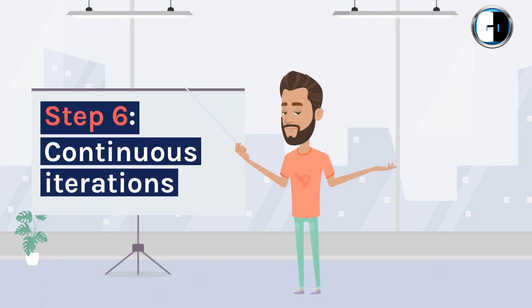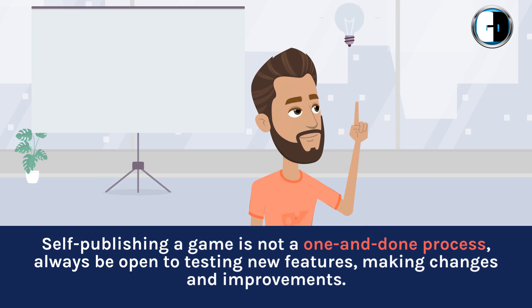Step 6: Continuous iterations. Self-publishing a game is not a one-and-done process. Always be open to testing new features, making changes and improvements.